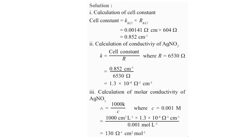For molar conductivity of AgNO3, use lambda equals 1000 times kappa upon C. With C equal to 0.001 molar, substituting gives the final answer as 130 ohm-inverse centimeter-squared mole-inverse. Always find the cell constant first when KCl resistance and conductivity are both given, then find kappa of the solution, and finally calculate lambda.